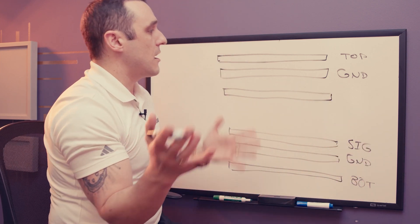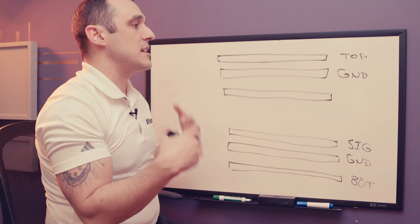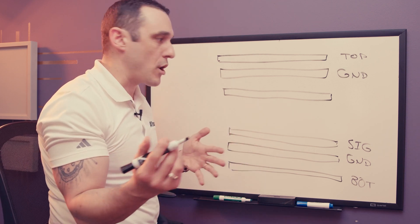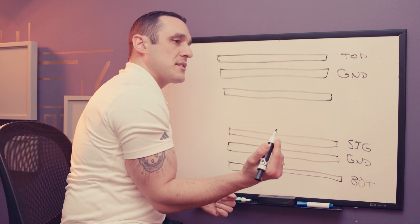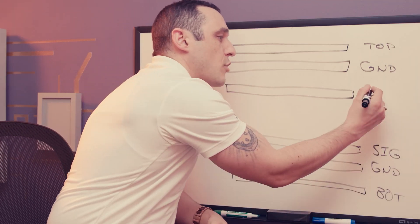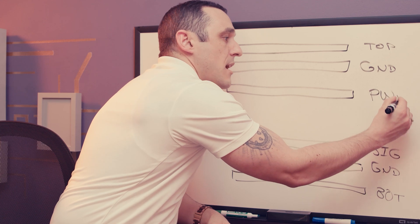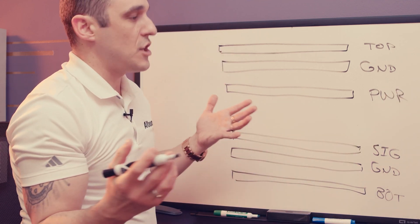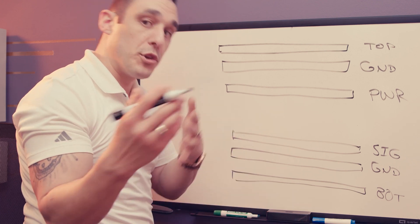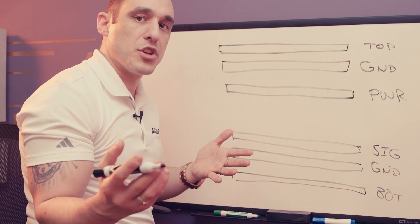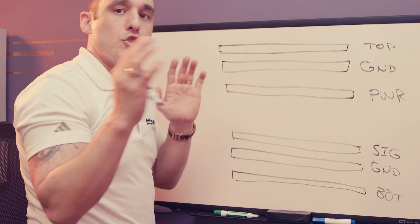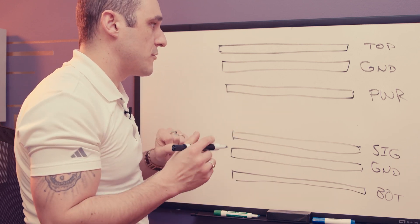In a lot of designs not dealing with large FPGAs or large application processors, that extra layer might also be signal. But generally with high speed design we actually want to set this to power, because a lot of digital components — especially large processors — run with multiple voltage rails at different voltages, so you can have a dedicated power layer for all of those signals and voltages.